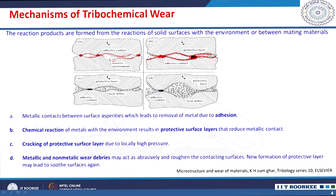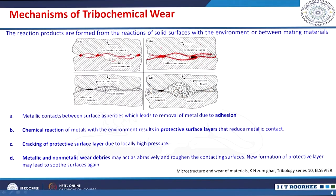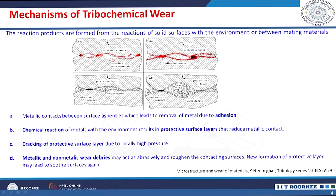Because of the reaction layers in between these two contacts, the metal-to-metal contact is reduced. Material is removed by cracking of this protective surface layer because of the high pressure. So there is debris forming out. The metallic or non-metallic wear debris may act as abrasive particles and roughen the contact surfaces. New formation of the protective layer may lead to soothing the surface again — it is a continuous process.